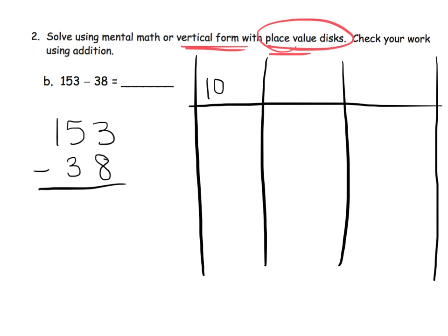Remember, the place value chart looks like this — here's our hundreds, our tens, and our ones. I'm going to begin by modeling 153. So there's 100, there's 50, and there's 3. Now the problem says that we are supposed to subtract 8. So we have 3 ones, and we're supposed to subtract 8.